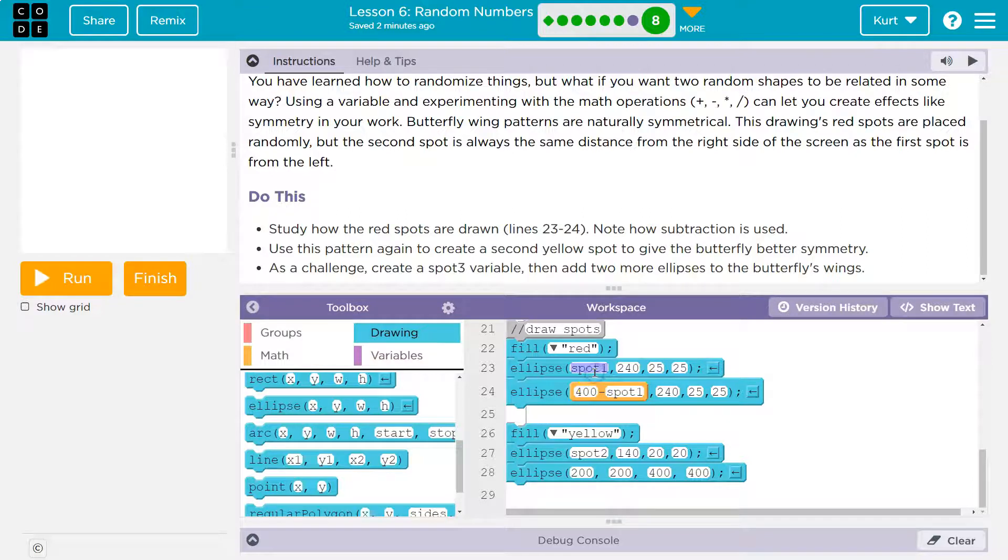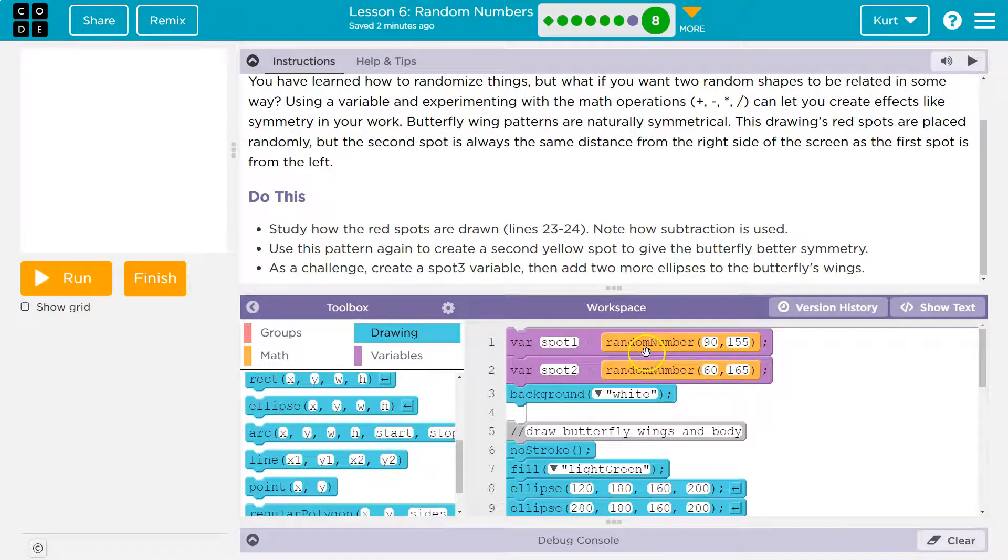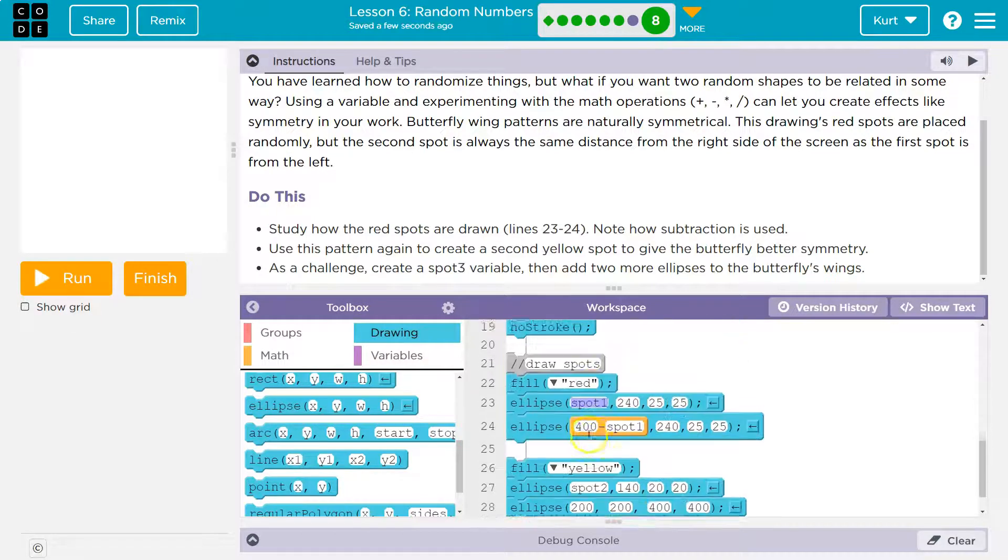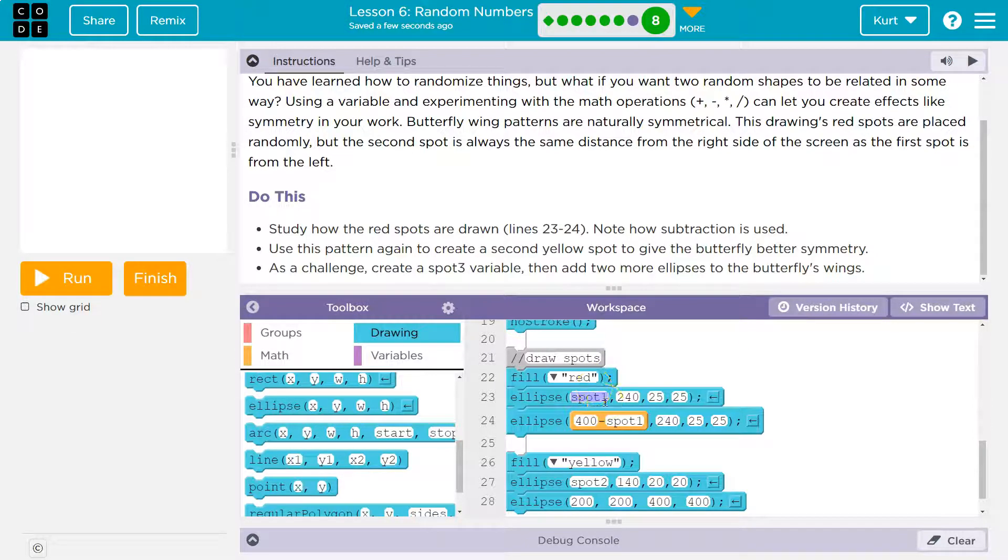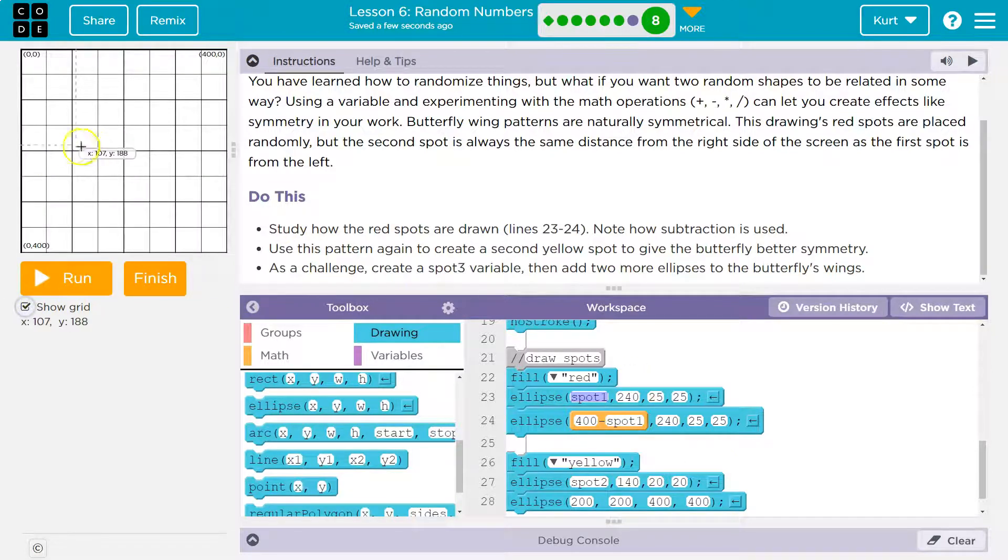So they grab spot one here. What's spot one? Ah, spot one is a random number. Oh, and that's how they're making it symmetrical. So they use spot one here and say spot one's 50. Well, 50 would be here, right? That's 50 from the left side of the screen.